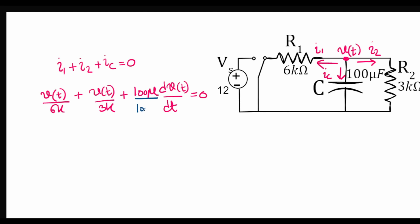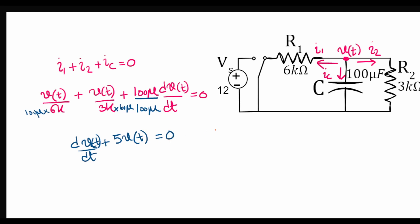Dividing this equation throughout by 100 micro gives the final differential equation: dV(t)/dt + 5·V(t) = 0. We have already looked at an equation like this in a previous lecture, where I found the time-domain response of an RC circuit by solving this type of differential equation.